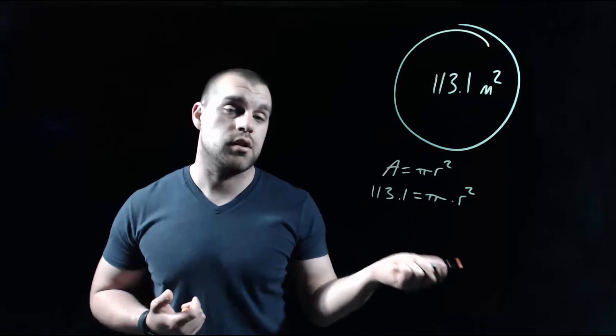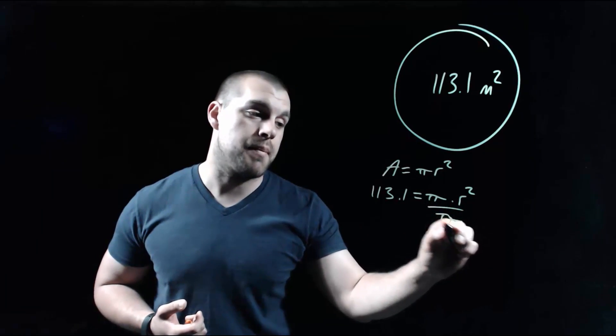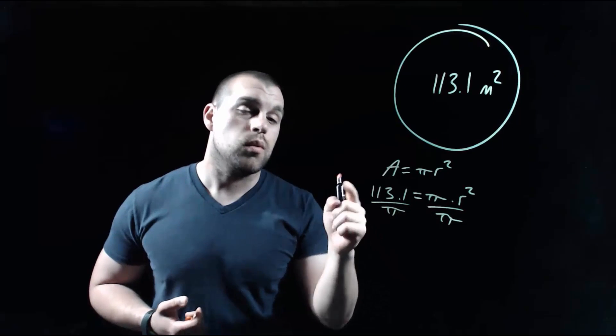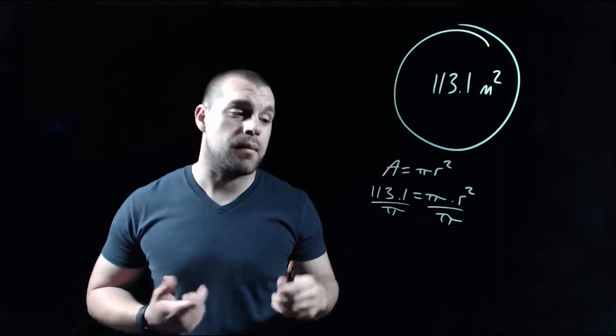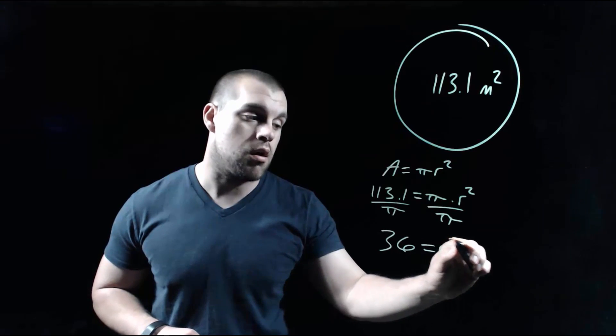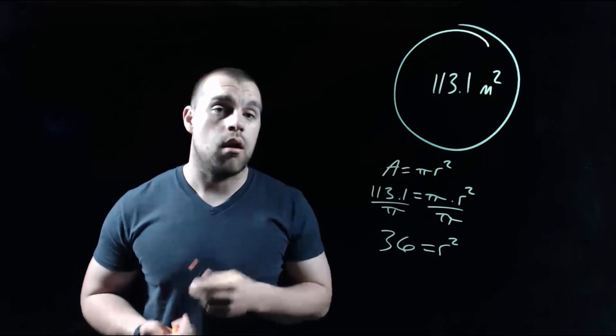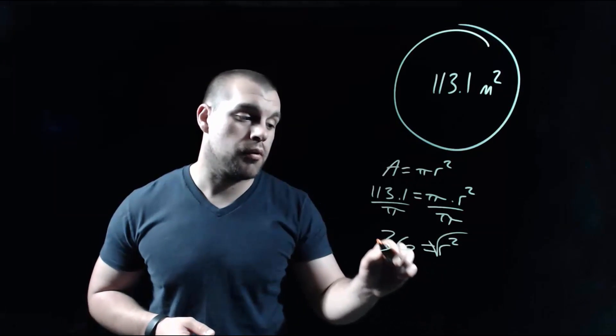Now we're trying to get r all by itself, so the first thing I'm going to do is divide both sides by pi. When we take 113.1 divided by pi, we get 36 equals r squared.